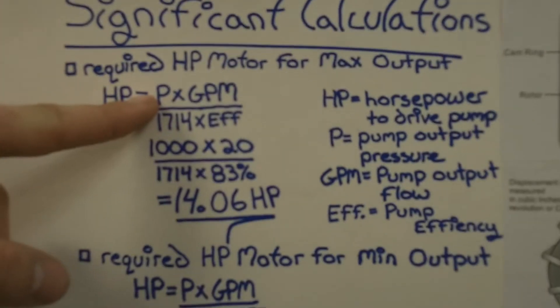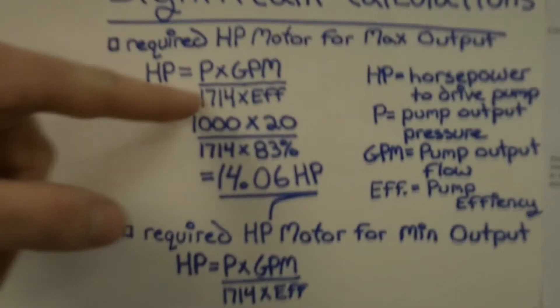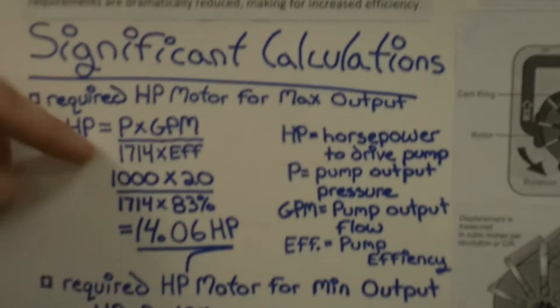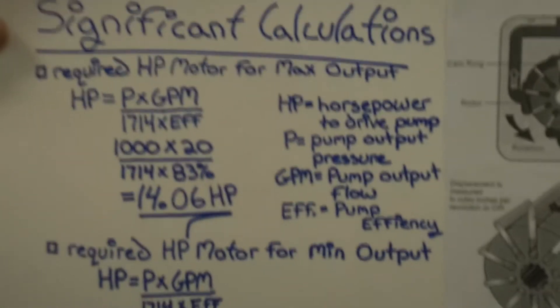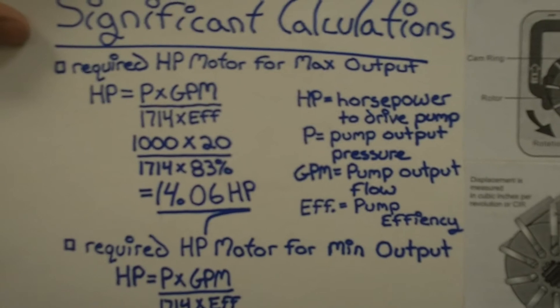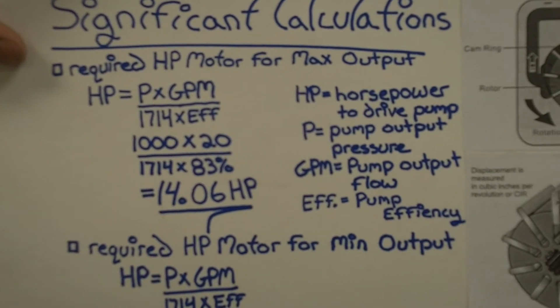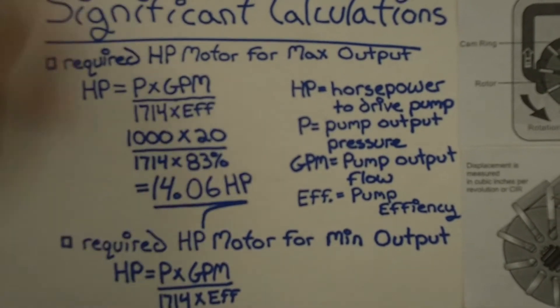Okay. That's a calculation. That's for horsepower. You take pump output times GPM, and then divide that by 1714 times efficiency, and you get that magical number.